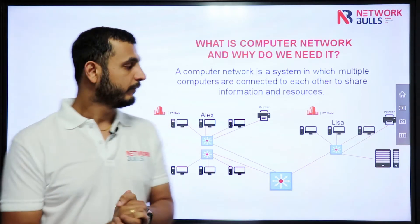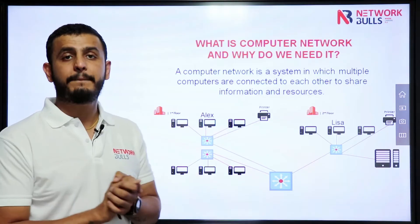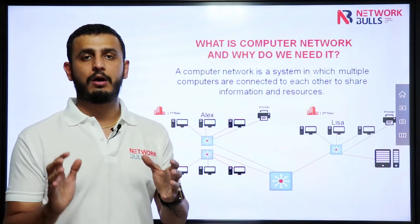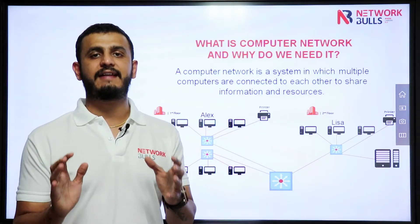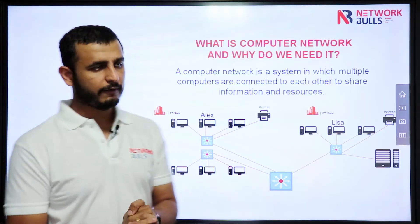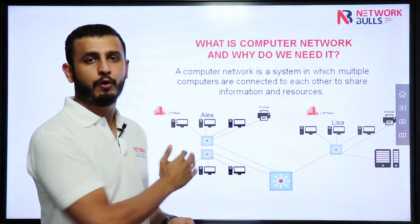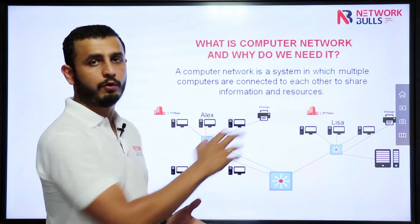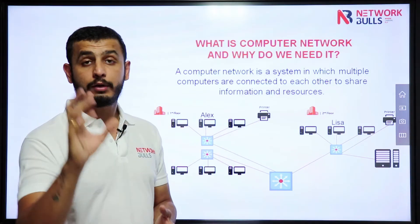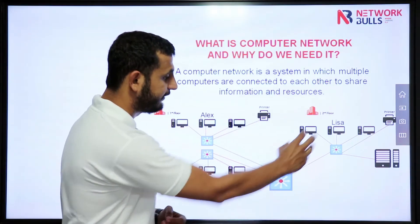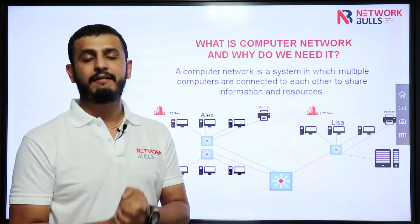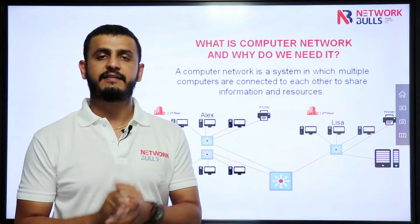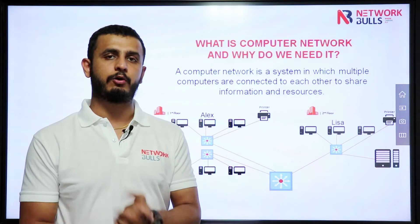Let me show you. This is a company's diagram. In terms of network, we call this diagram a topology. In this company we have two floors. You can see some computers at each floor, and you can also see these blue color devices. These devices are actually switches. We will discuss about these switches in the upcoming videos.